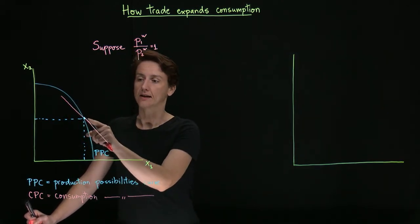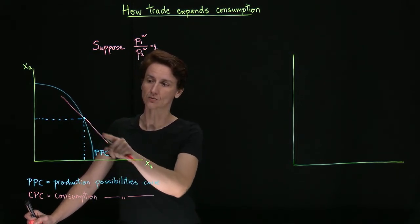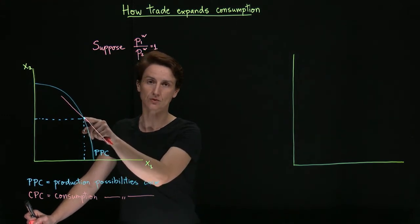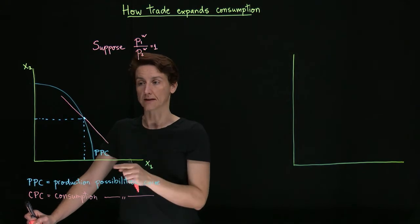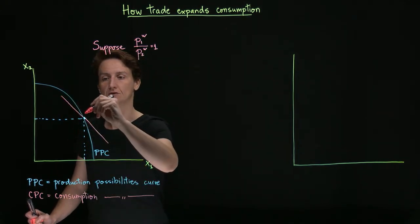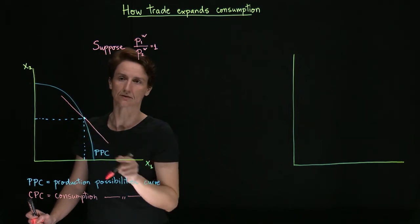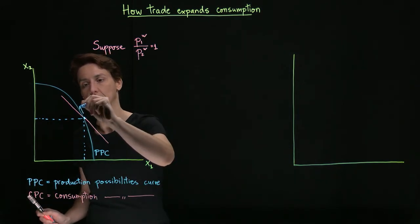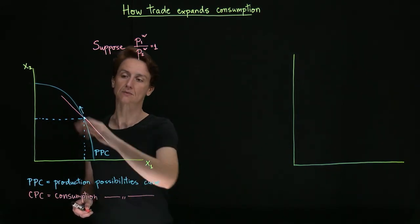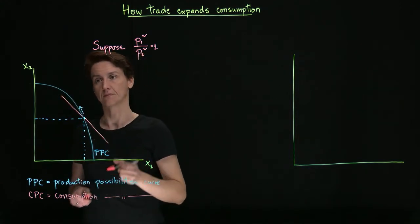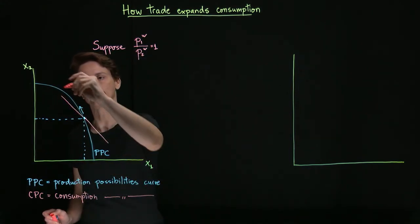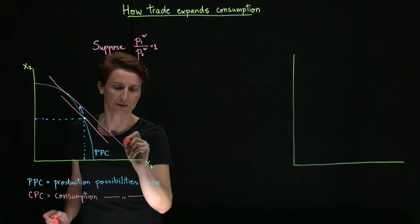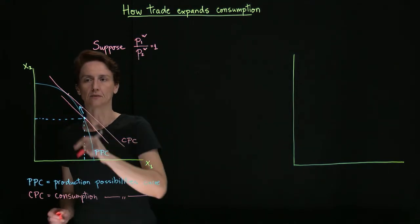But here's the thing, if this is true, if we can now consume anywhere along a line of slope one, there's no reason we should continue to produce at this point anymore. In fact, you might notice that if we switch to producing more of good two and less of good one, so if we move production in this direction, that's going to expand the set of bundles we have access to. So we'll continue to make this shift until we get to a tangency between CPC and the point of production.